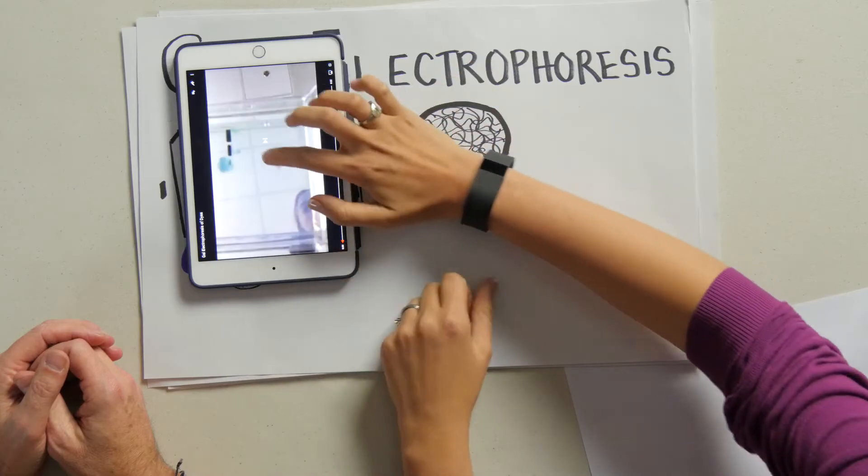Now Mary, you have a really ingenious way that you captured what happens in this process by putting a cell phone underneath a gel electrophoresis unit. Let's take a look in real life at our gel.